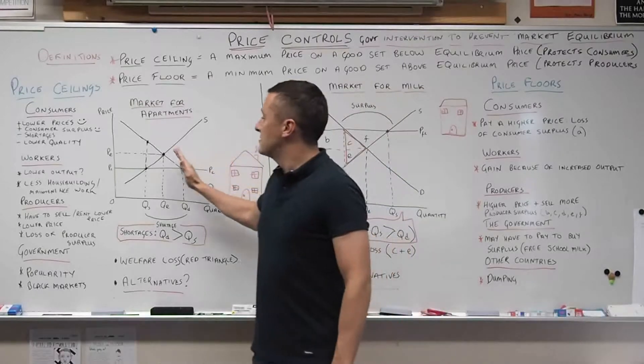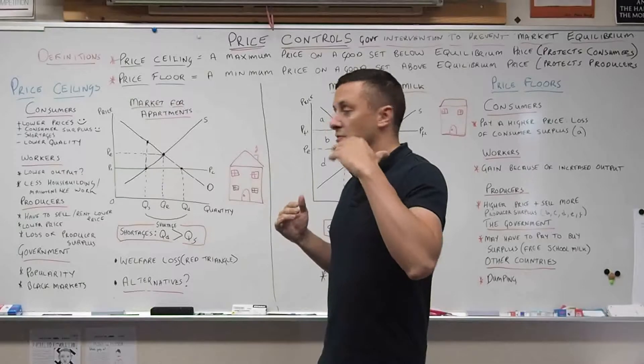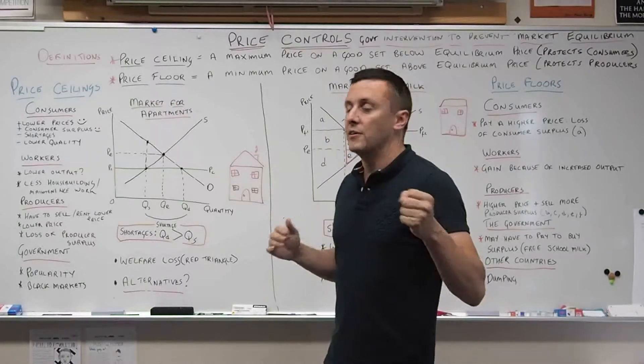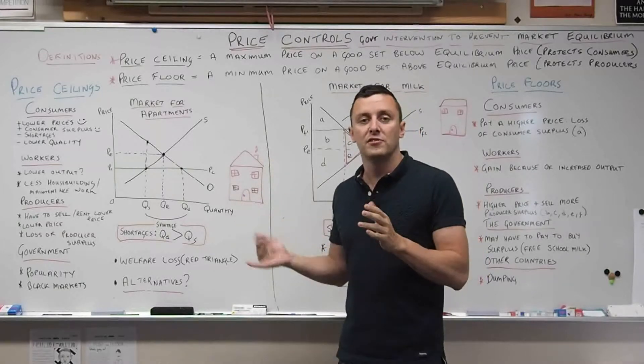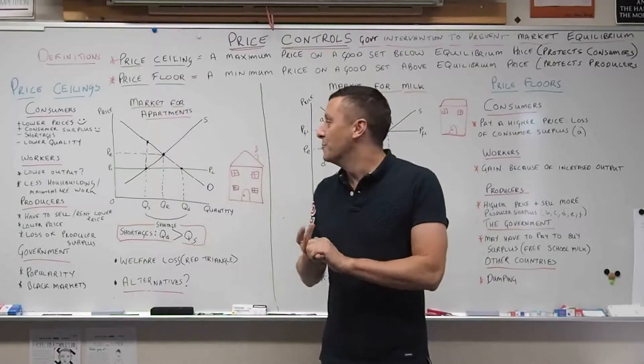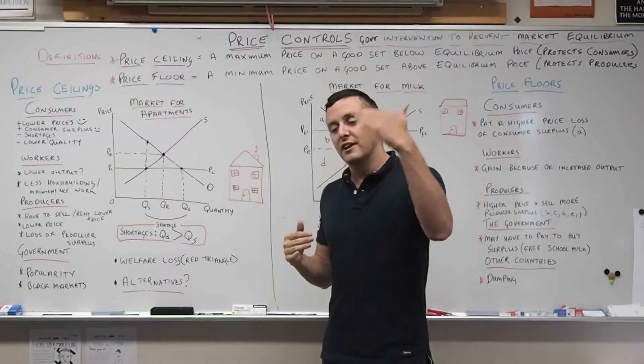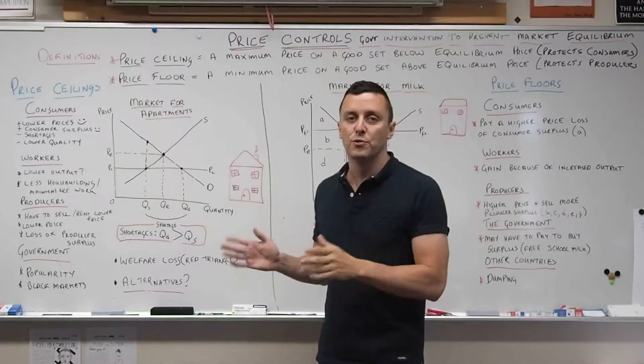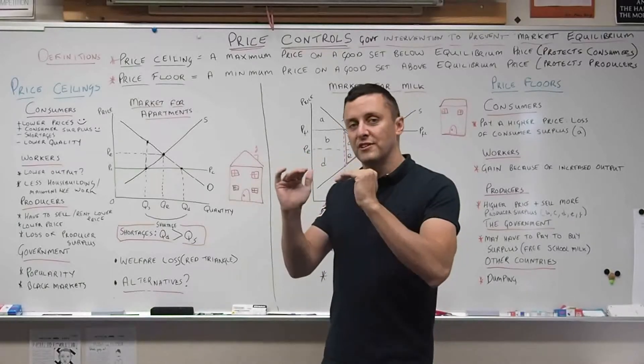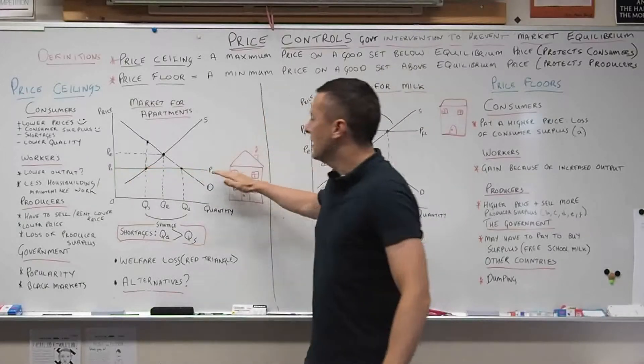So in this case, there's pressure on the government because the price is too high for them to lower the price. This has happened many times with apartments - in New York, London, Tokyo and most major cities, where house prices rise too high for an ordinary person to afford. So there's pressure on the government to introduce a price ceiling.